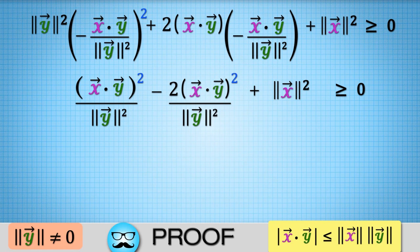Then our inequality becomes x dot y squared over norm of y squared minus 2x dot y squared over norm of y squared plus norm of x squared is greater than or equal to zero.